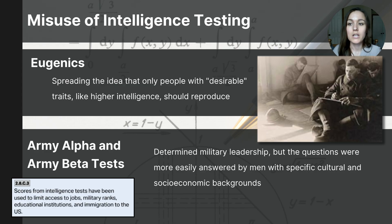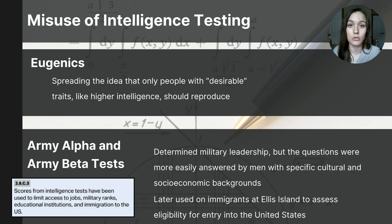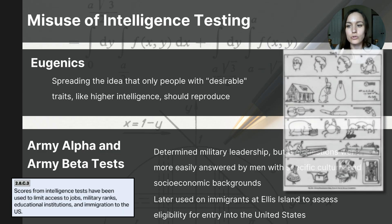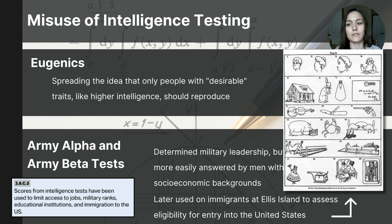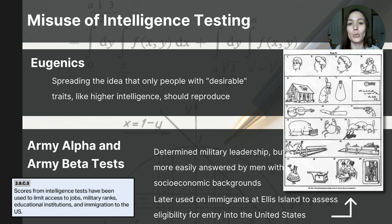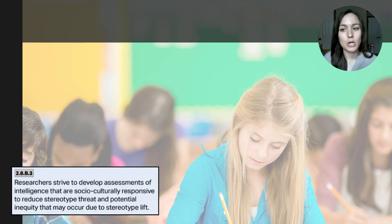In the 1920s, after the Immigration Act of 1924, the Army Beta test was used on immigrants at Ellis Island to assess their eligibility for entry. Immigrants unfamiliar with culturally biased items like light bulbs or phonographs, or unfamiliar with tasks like filling in bubbles, were often labeled as unfit for entry, reinforcing discriminatory views on intelligence. These examples highlight the potential harm of intelligence testing when applied unethically or without consideration of cultural biases. The Army Alpha and Beta tests failed to account for cultural biases, measuring societal knowledge rather than true intelligence.